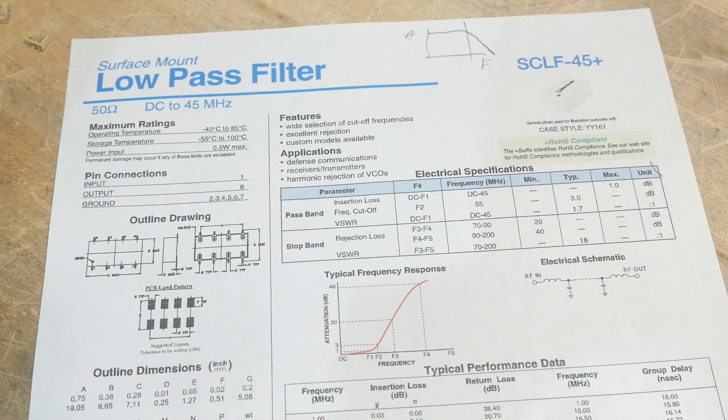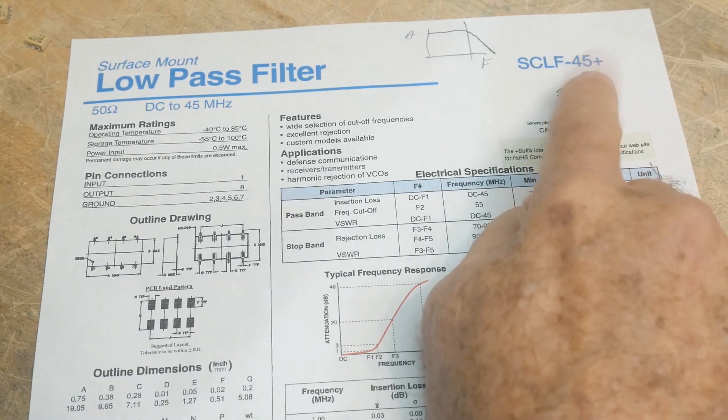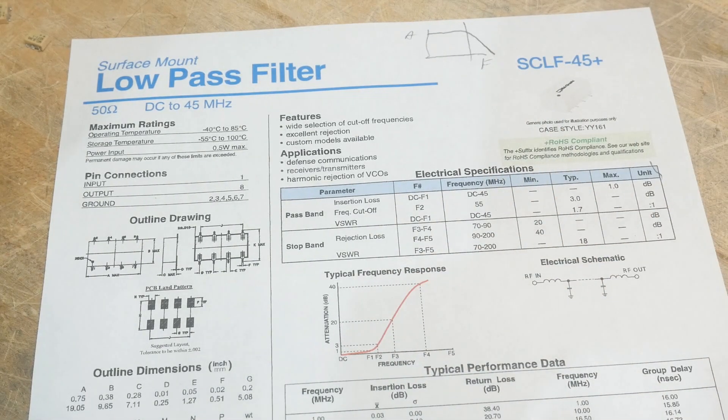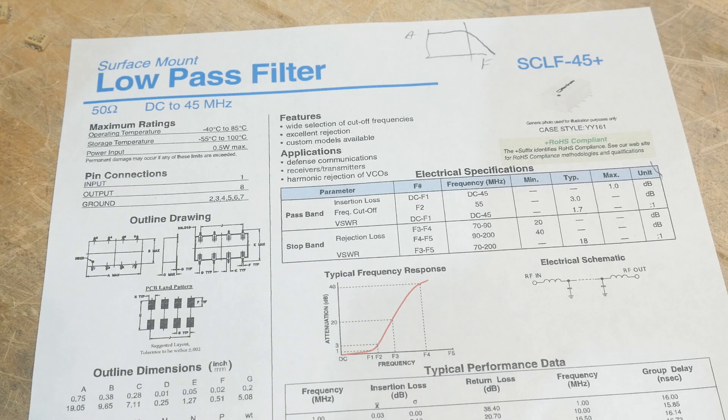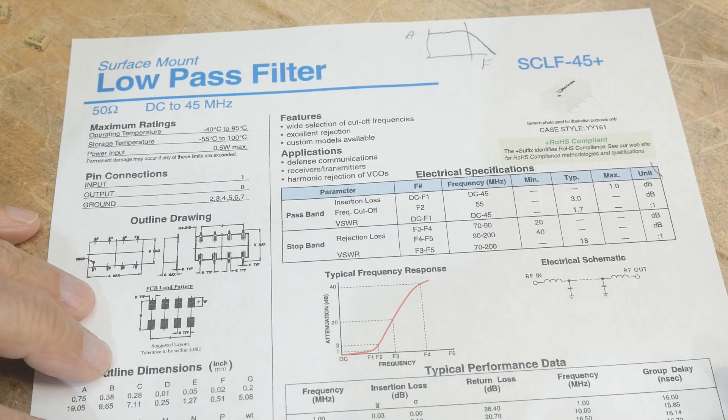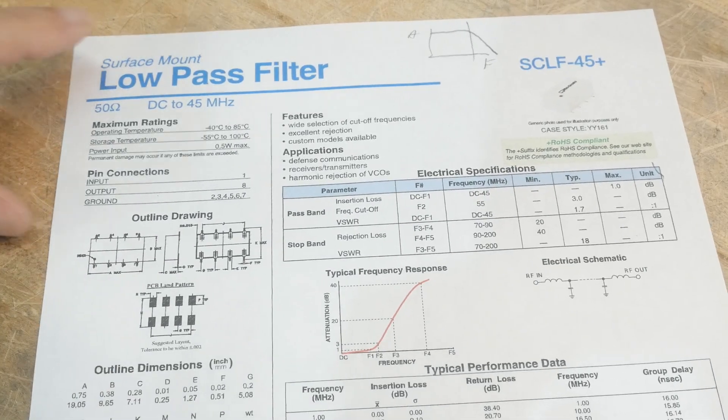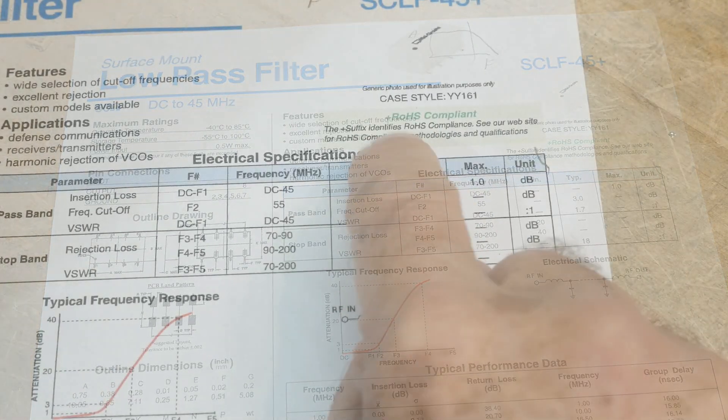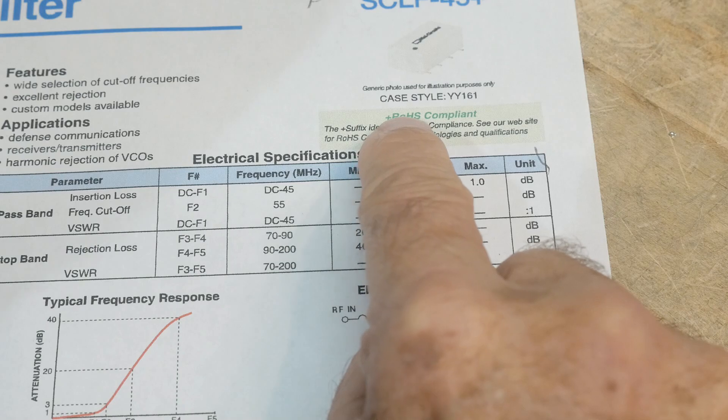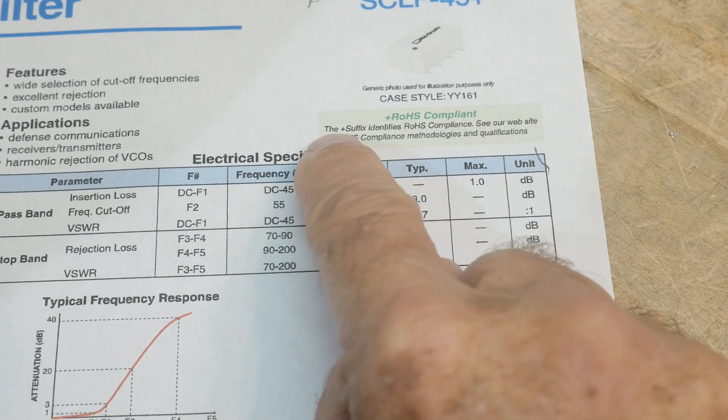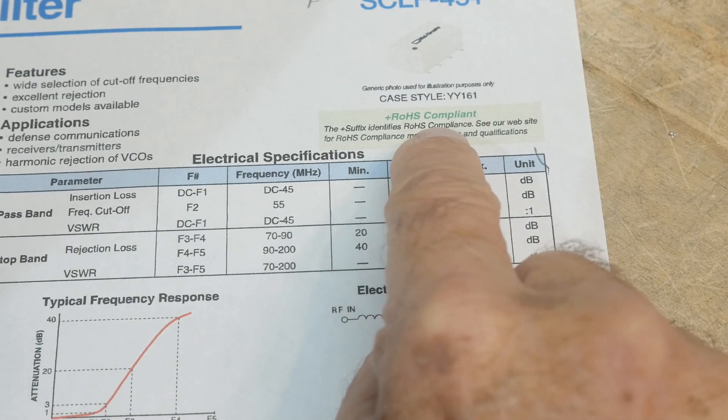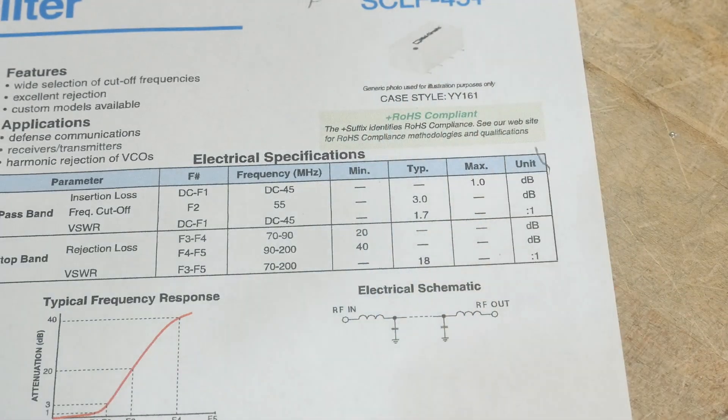All right. That was chip of the day, an SCLF-45. I was told the plus means that it's, what is it? RoHS-compliant. Anyway, it's got no lead in it. So yeah, there you go. Ah, it's right here. Plus ROHS compliant. The plus suffix indicates compliance. So yeah, there you go.